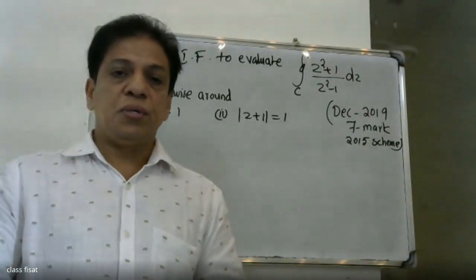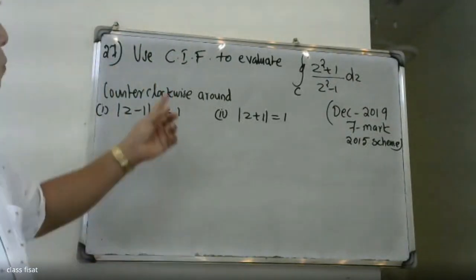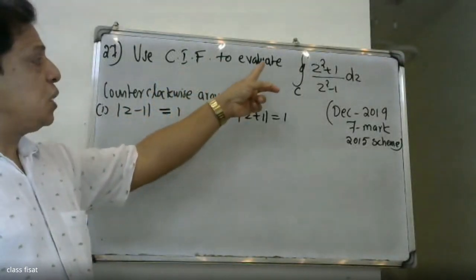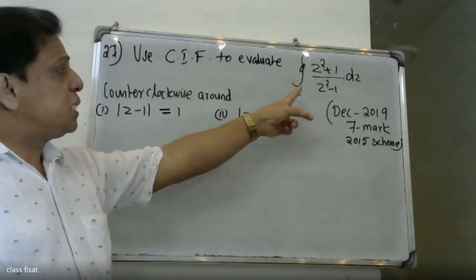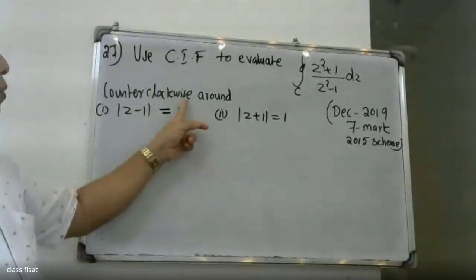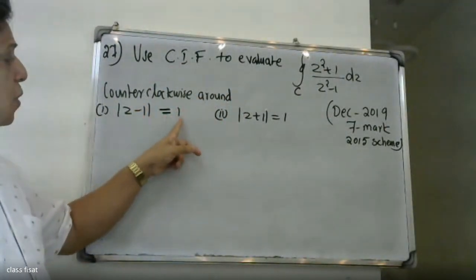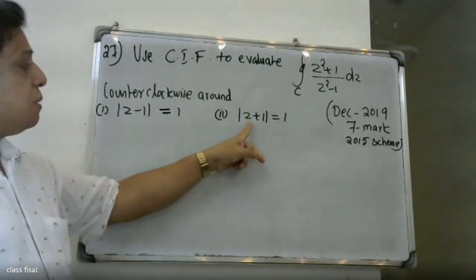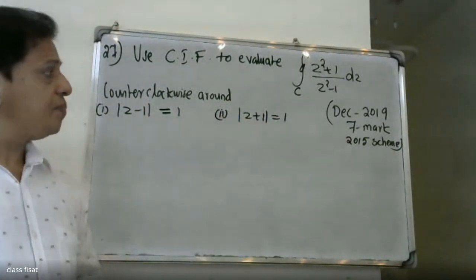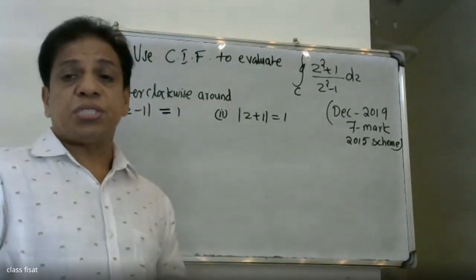Good morning students. Use Cauchy's integral formula to evaluate the integral of (z² + 1) / (z² - 1) dz, counterclockwise around |z - 1| = 1 and |z + 1| = 1. This is an 8-mark question.